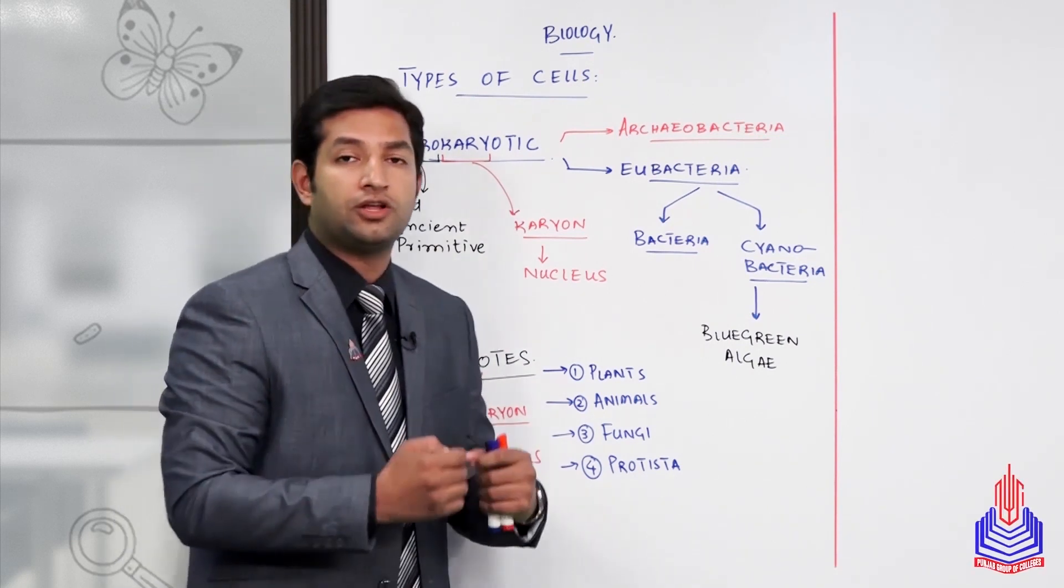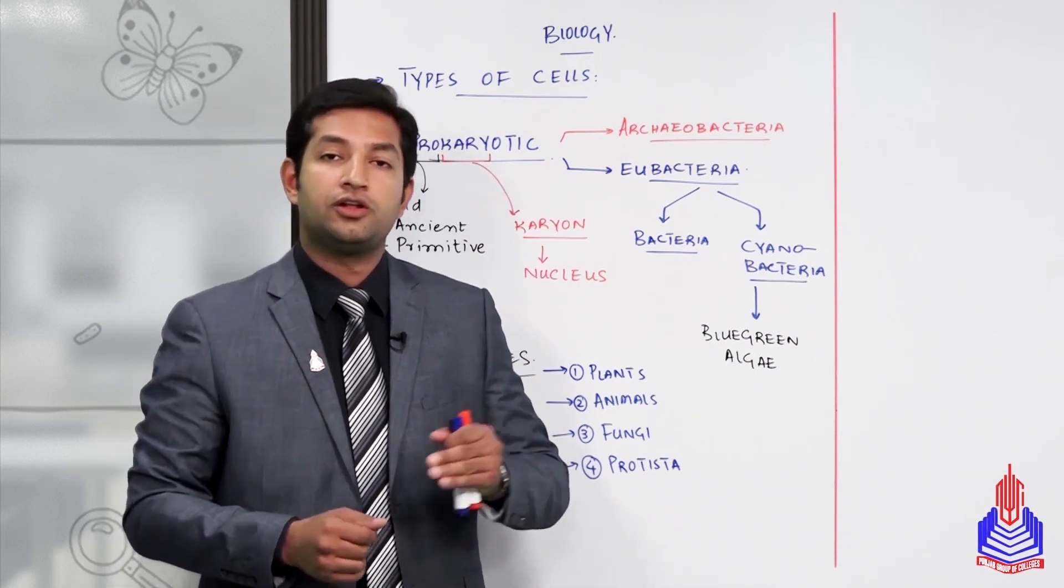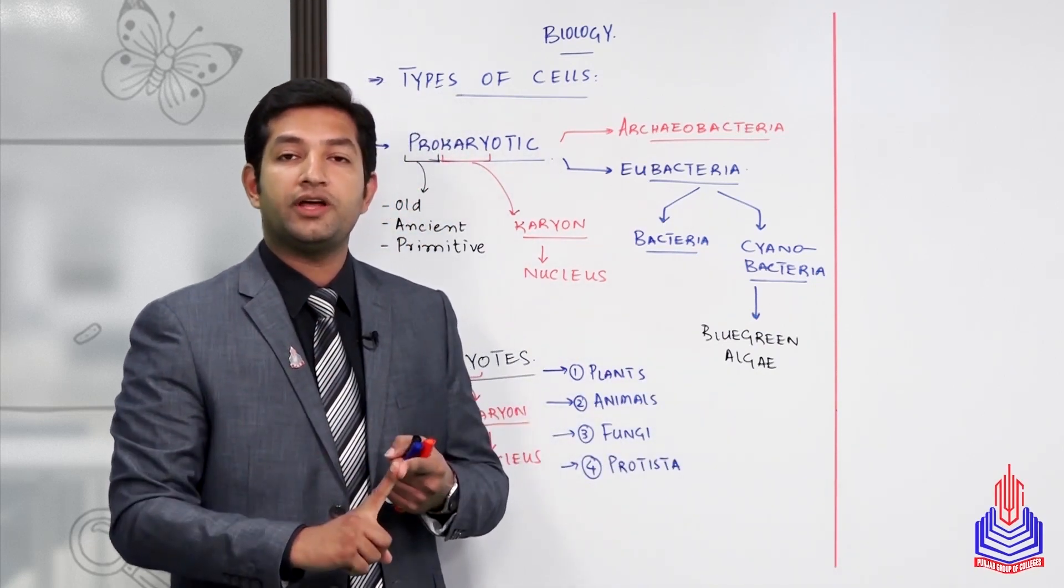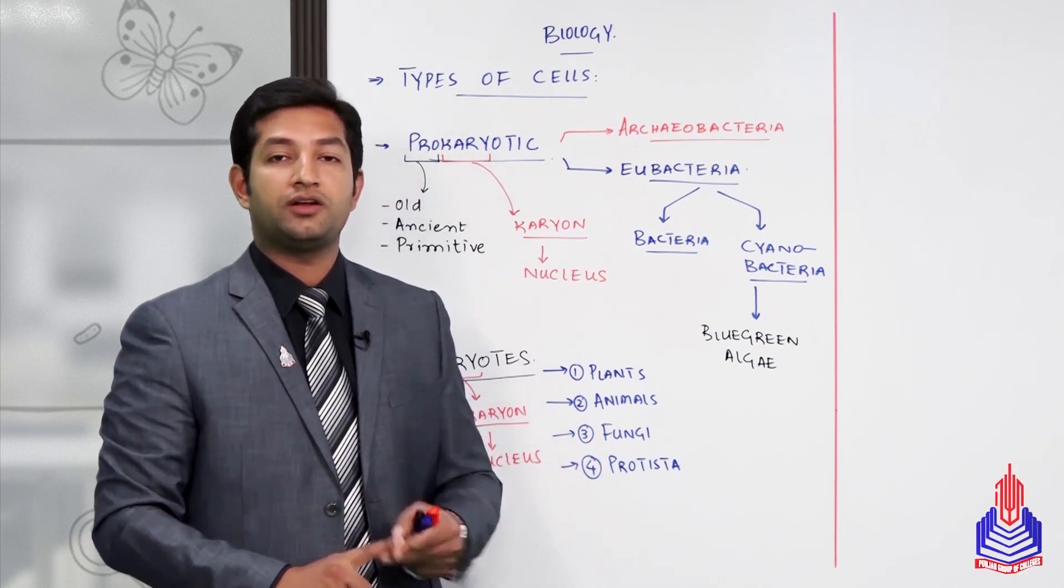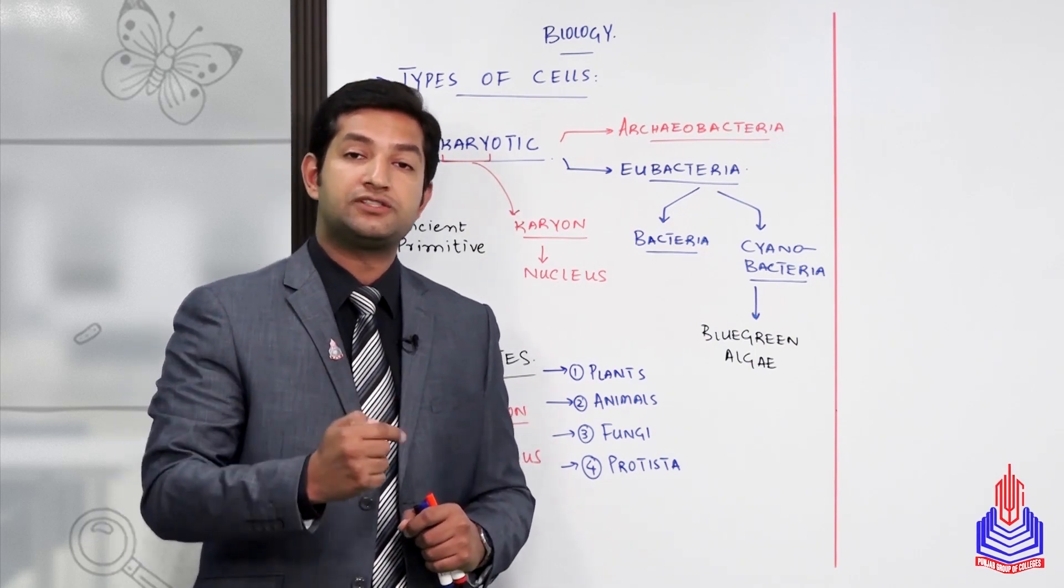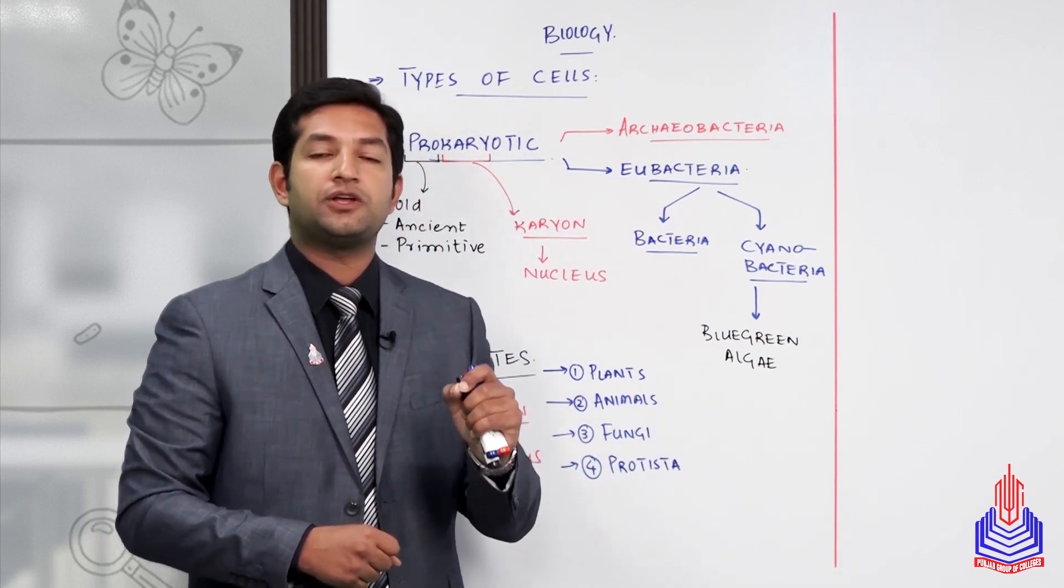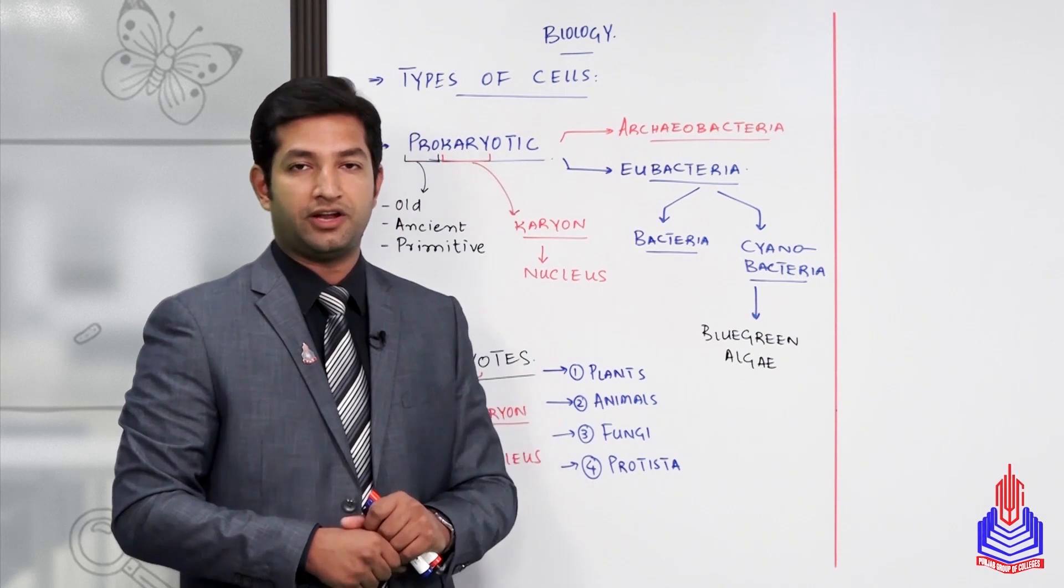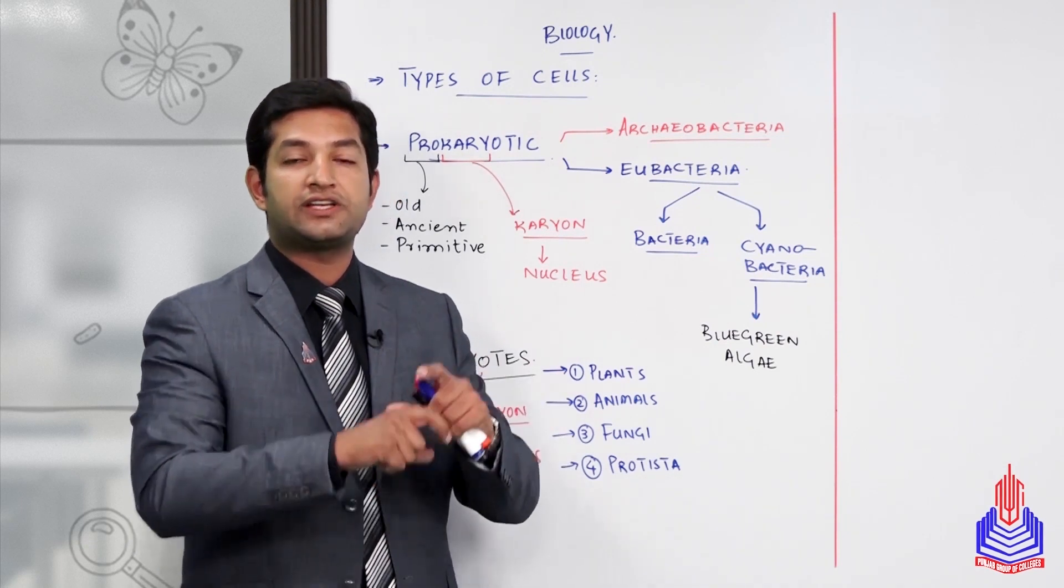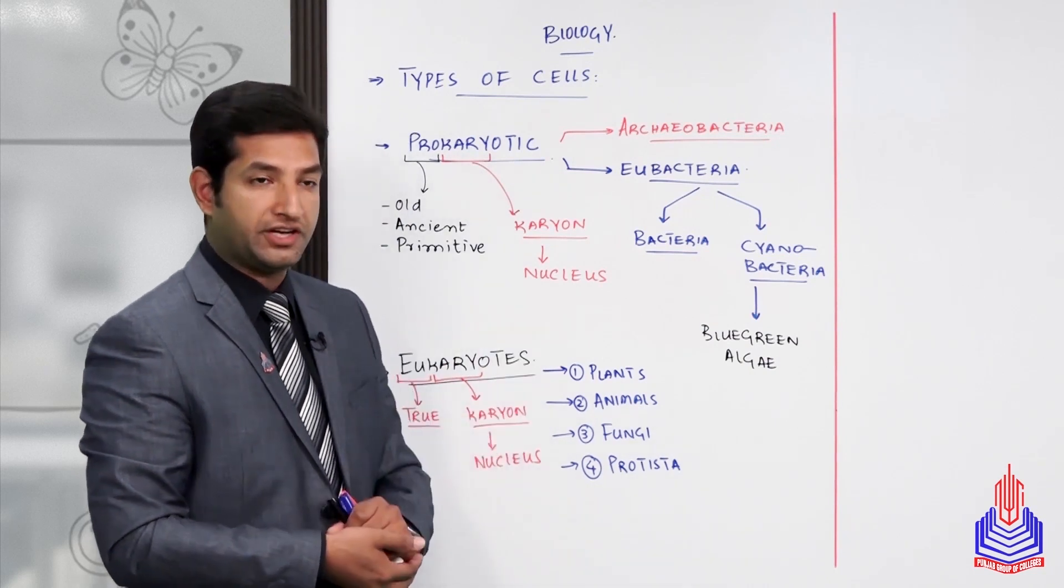Now for further details, when we compare and differentiate eukaryotic from prokaryotic cells, you need to remember two things: number one is similarities, and number two are differences. When looking at comparisons, you should know both. If the question asks only to differentiate, then explain only the differences between them.